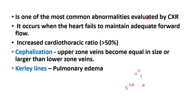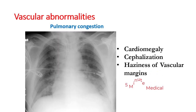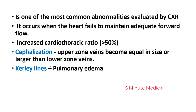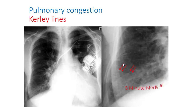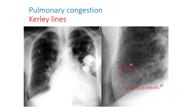An important finding in pulmonary edema is the Kerley B line, found at the lung bases. There are Kerley A, B, and C lines; Kerley B lines are the most important indicator of pulmonary edema.